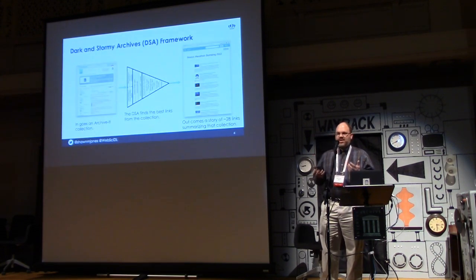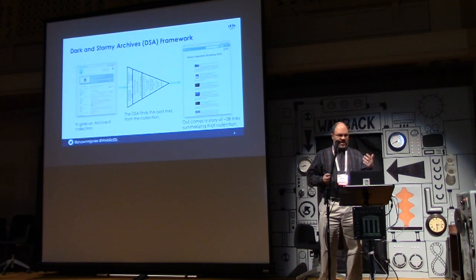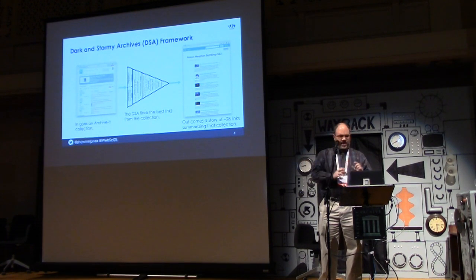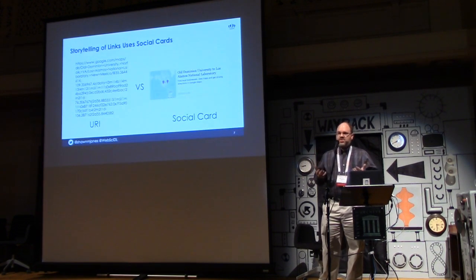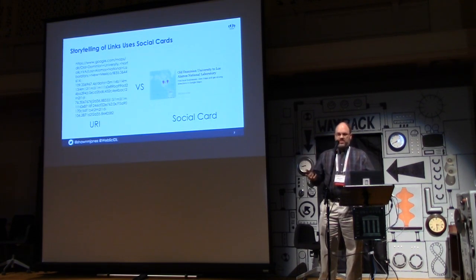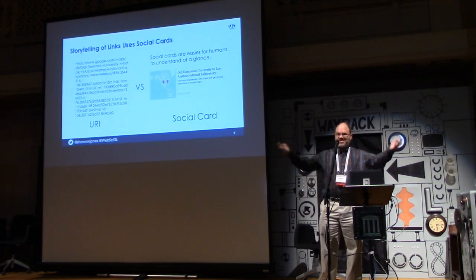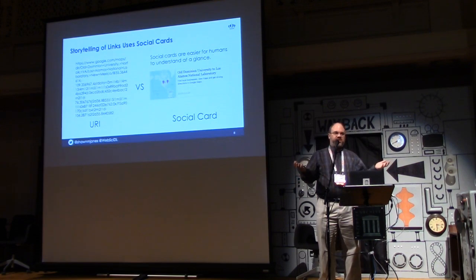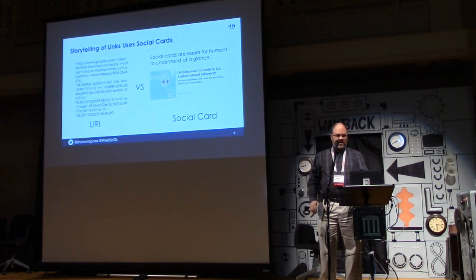The Dark and Stormy Archives Framework takes a web archive collection, finds the best links in the collection, and produces a story of 28 links summarizing that collection using a storytelling service. This works because when you put links into a storytelling service, it creates social cards. Looking at a raw link versus a social card, the social card is much easier to understand — which is the whole reason we have social cards on Twitter and Facebook.